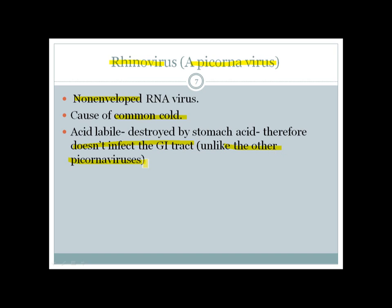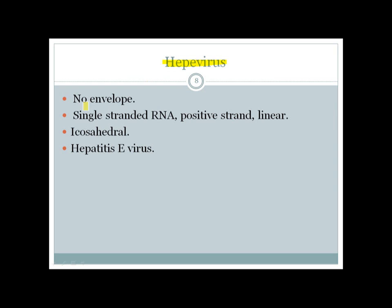Hep E virus is another RNA virus with no envelope — remembering 'CPR to a naked hippie,' hippie means naked. It has a single-stranded, positive-strand RNA (from 'hippie California pickles') and a linear genome. Hepatitis E virus is the important member of the Hepeviridae family.